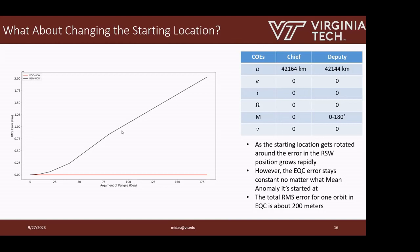For a circular chief orbit, this EQC frame allows us to use these HCW equations to model the deputy over a really wide range of distances from the chief. The initial assumption was that you have to be close to the chief — what we've shown here is that's not really true. You just have to be close to the chief's orbit. The error starts to get worse the bigger your semi-major axis difference is, and if you start adding eccentricity to the deputy's orbit, but there is a pretty decent range of orbits where the deputy can still be modeled really well by these HCW dynamics.